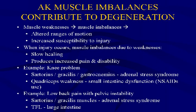For example, with a knee problem: sartorius, gracilis, gastrocnemius, adrenal stress syndrome related weakness, and quadriceps weakness related to small intestine dysfunction — oftentimes with NSAID use irritating the small intestine. Someone sees a person running on TV with a taped knee, starts taking a non-steroidal anti-inflammatory drug, and has been running fine ever since after surgery.